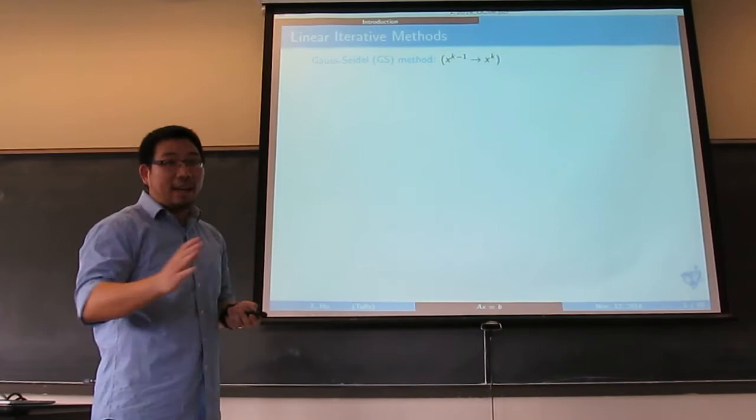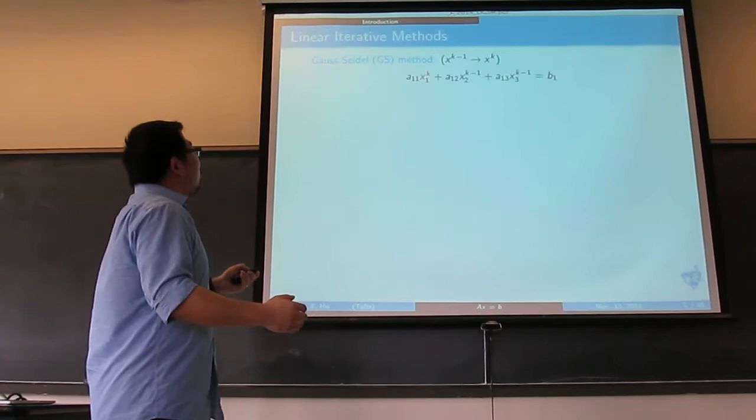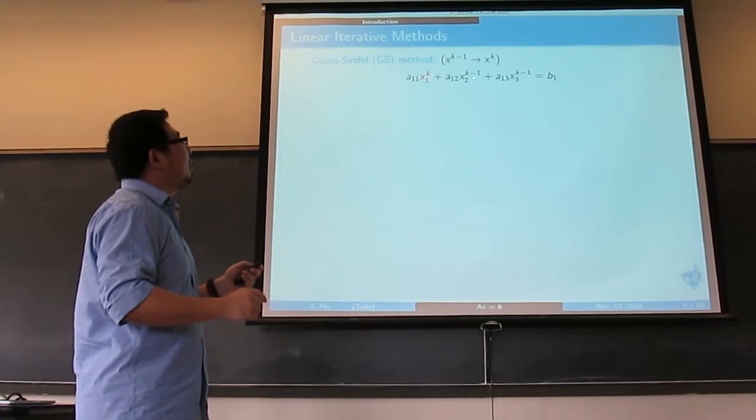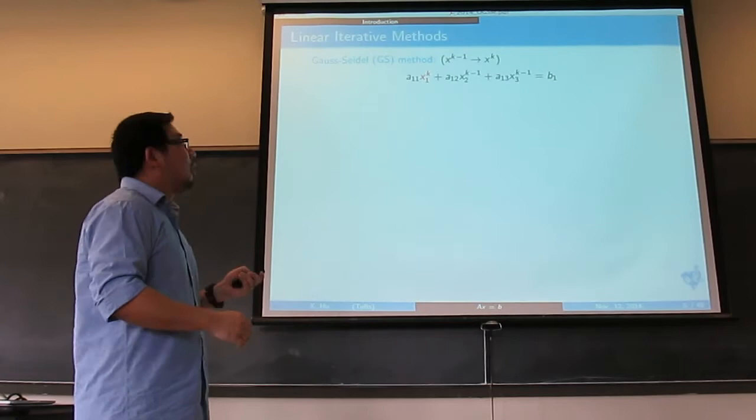Instead of solving it directly, we do iterations. You start from a previous iteration x_{k-1} and compute the next iteration x_k. One method is called the Gauss-Seidel method, still using a 3x3 as an example. What you do is solve a local problem. You first solve the first equation: fix x_2 and x_3 as values from the previous iteration, and you only solve x_1.